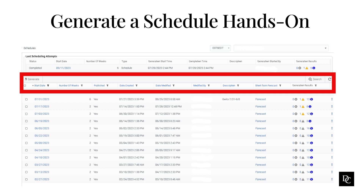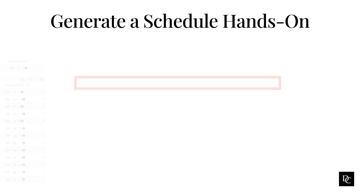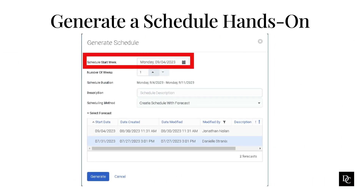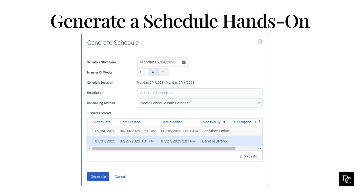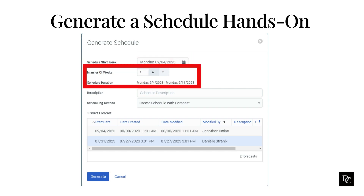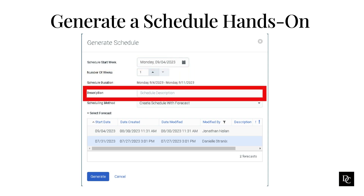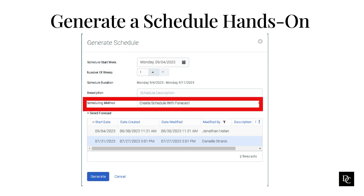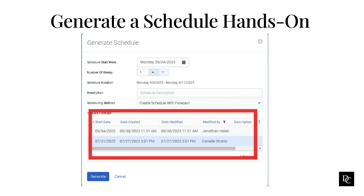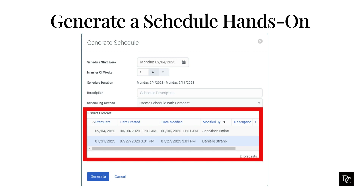Let's generate a schedule. Let's create a schedule with forecasts. The Generate Schedule page opens. Click the Calendar button at the end of the Schedule Start Week box and select the Start Week. Click the arrows at the end of the Number of Weeks box to indicate the schedule length, from 1 to 6 weeks. Add a description for the schedule. Click the Scheduling Method list and select Create Schedule with Forecast. Under Select Forecast, click the forecast on which to base the schedule. Click Generate.